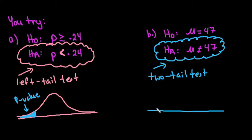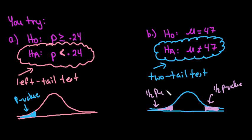So when I draw out my normal curve, this tells me I would shade both tails. Half of my p-value would be in the right tail, and half would be in the left tail.